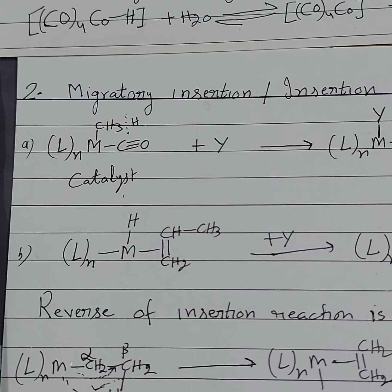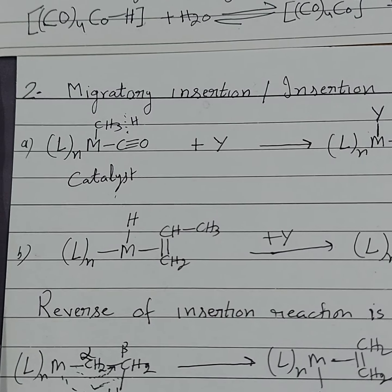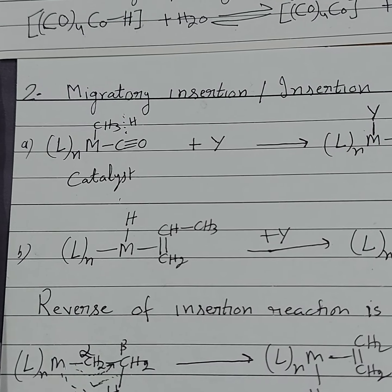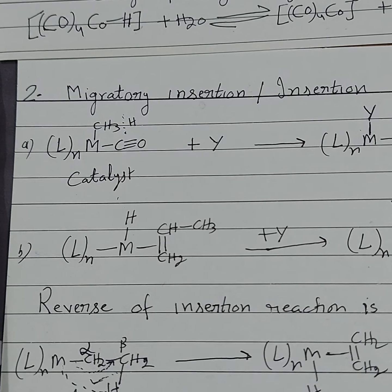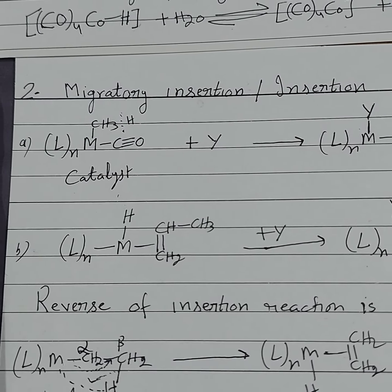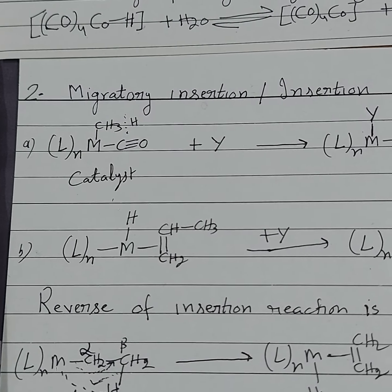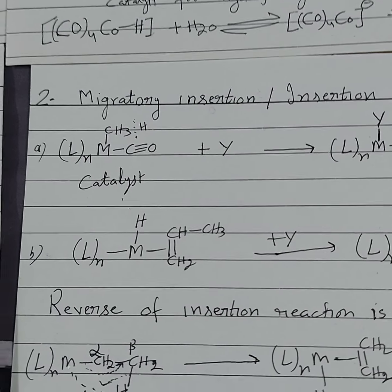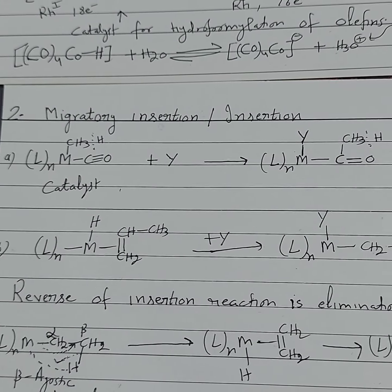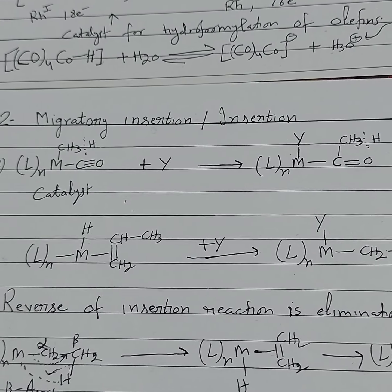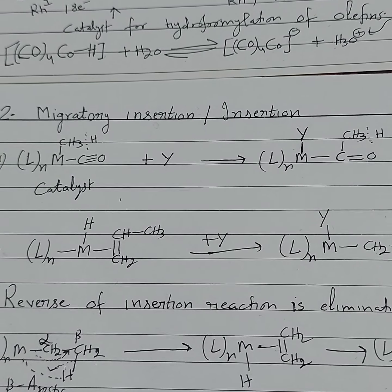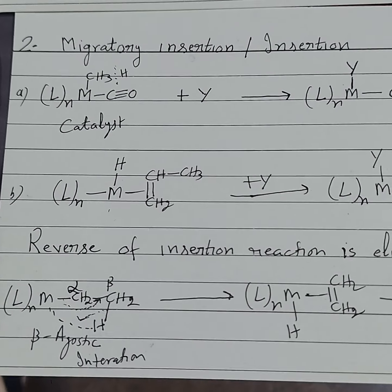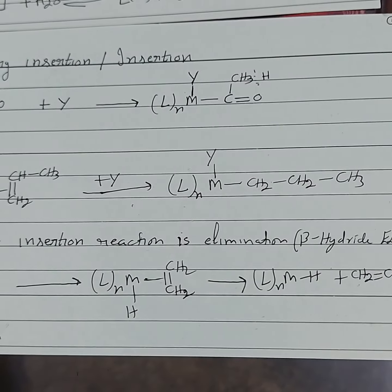For migratory insertion, the important condition is that in the catalyst, the metal must be surrounded by H or CH3 groups and must be attached to an unsaturated ligand like CO, CN, alkene, or alkyne. When the catalyst satisfies these two conditions — metal surrounded by H or CH3 and attached to CO, CN, alkene, or alkyne — then H or CH3 migrates to the carbonyl carbon, producing a vacant site on which the substrate Y is inserted. For example, H migrates to the alkyne system and produces a metal-alkyl system.